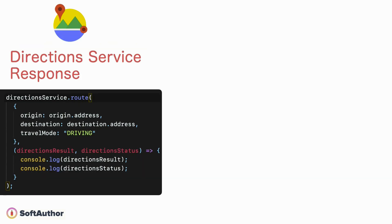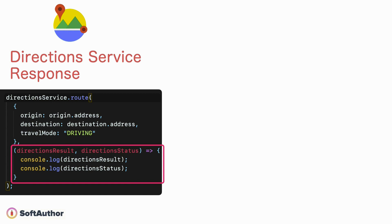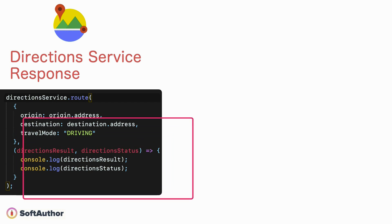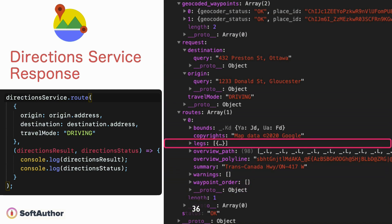The third required property is travelMode (M uppercase), which can be DRIVING, BICYCLING, TRANSIT, or WALKING — all uppercase. The second argument to the route method is a callback function. Since the Directions Service is asynchronous, the callback is called upon completion and returns a directions result and directions status. The response object contains properties like legs, which includes travel distance, duration, and step-by-step maneuver instructions, and overviewPath with location coordinates for drawing the polyline.